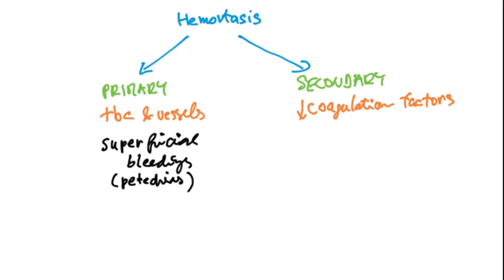If there's something with the coagulation factors, then you will rather look for deep bleedings—deep muscle bleedings or especially bleedings into the joints. Before we get to physiology, I'll remind you of some basics.